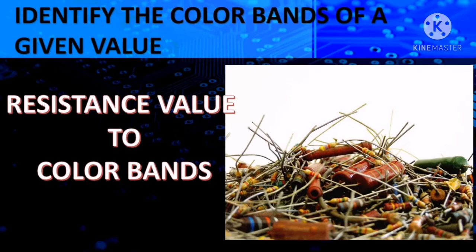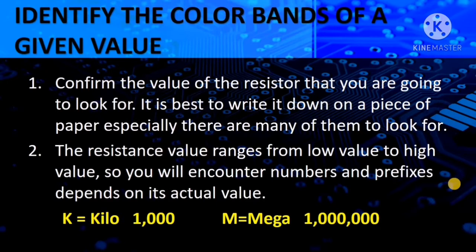Now this is the reverse. Before, we had the colors and computed the value. This time, we have a resistance value but need to identify the colors. We apply this in situations where you have the value but don't know what the colors would be — so you can identify the color combination of a resistor and find it without confusion. First, confirm the value of the resistor you are looking for. It's best to write it down, especially if there are many. Note the prefixes used — usually kilo and mega, signifying thousands and millions.